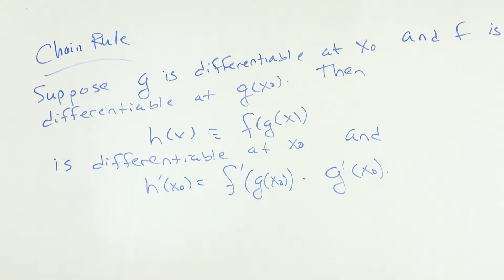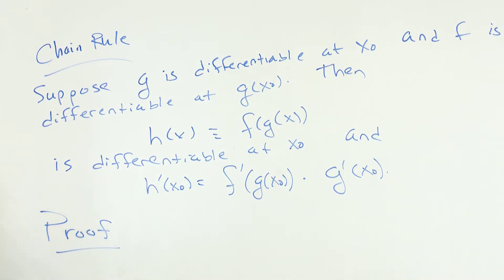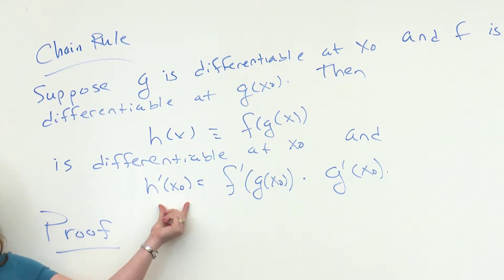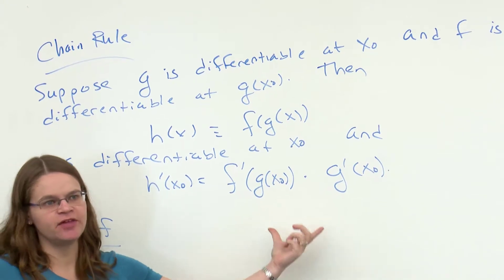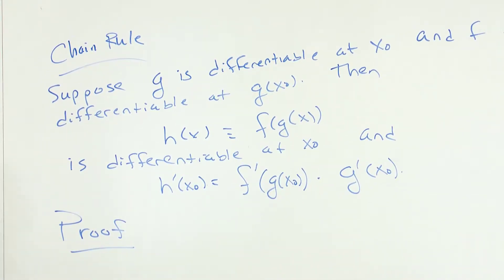You've seen this before, but this theorem is probably not entirely obvious why it's true. You're used to using it so you think it's obvious, but we need to reason our way there. Our first attempt: the derivative is defined as a particular limit, so we should try to write down that limit and show it exists and equals something.